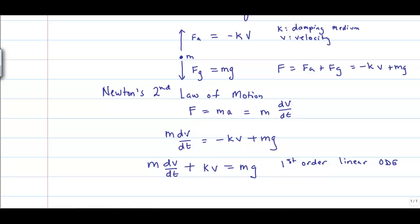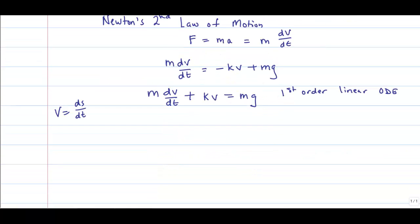We could also look at the same equation in terms of distance instead of velocity. Velocity is just the first derivative of distance with respect to time, and we would then get a second-order linear differential equation.